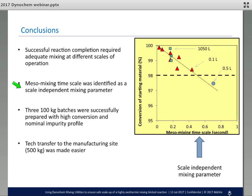Constancy of mesomixing timescale helps us achieve successful reaction completion at different reactors and different manufacturing sites. With that, we successfully transferred this process to the manufacturing site and prepared 300 kg batches with very high conversion and a desired purity profile. As a result, tech transfer to the manufacturing site at 500 kg and above was made much easier with this analysis.